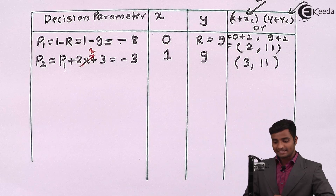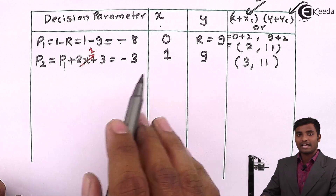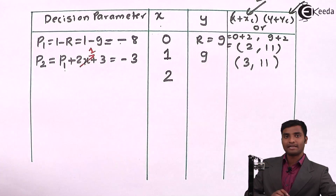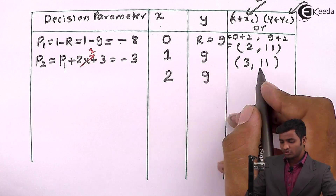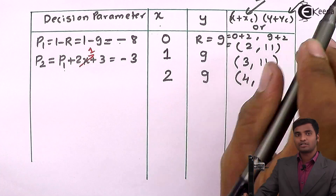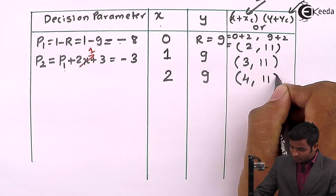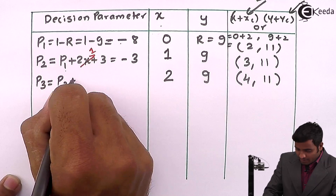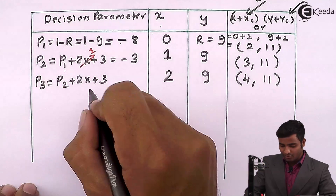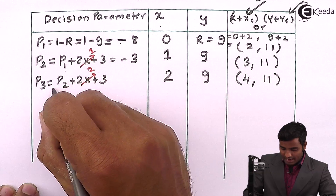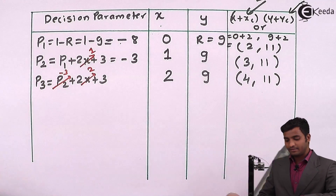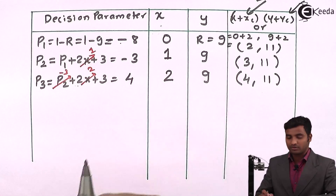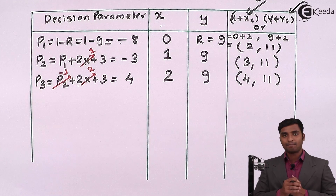Again P = -3, which is less than 0. So X = X + 1 = 2 and Y remains 9. The coordinate is 2 + 2 = 4 and 9 + 2 = 11, giving (4, 11). For P3: P3 = P2 + 2X + 3 = -3 + 2(2) + 3 = -3 + 7 = 4, which is a positive value meaning the decision parameter is greater than 0.